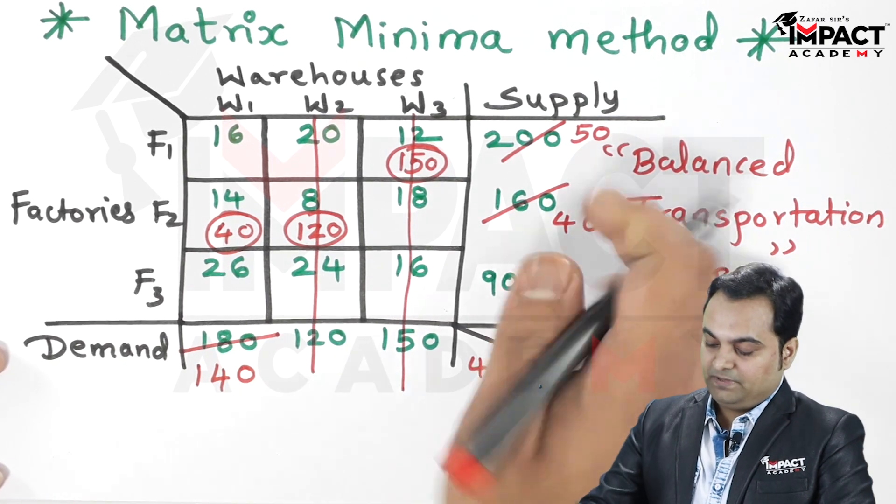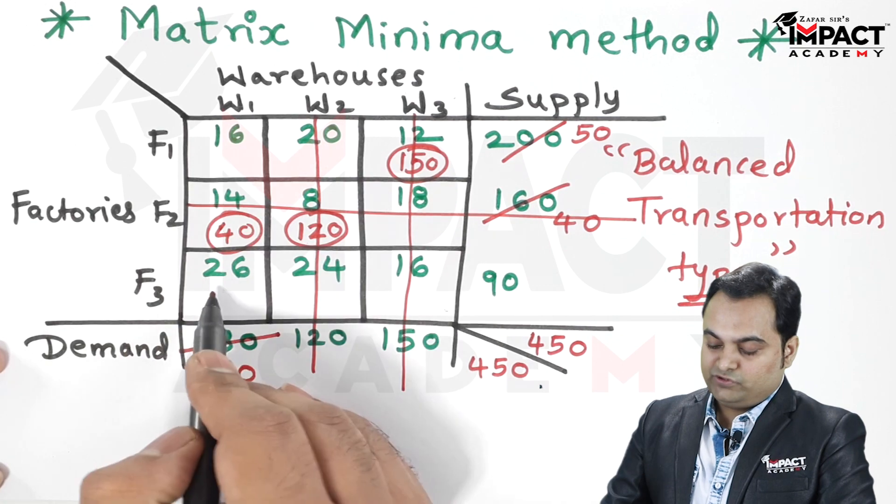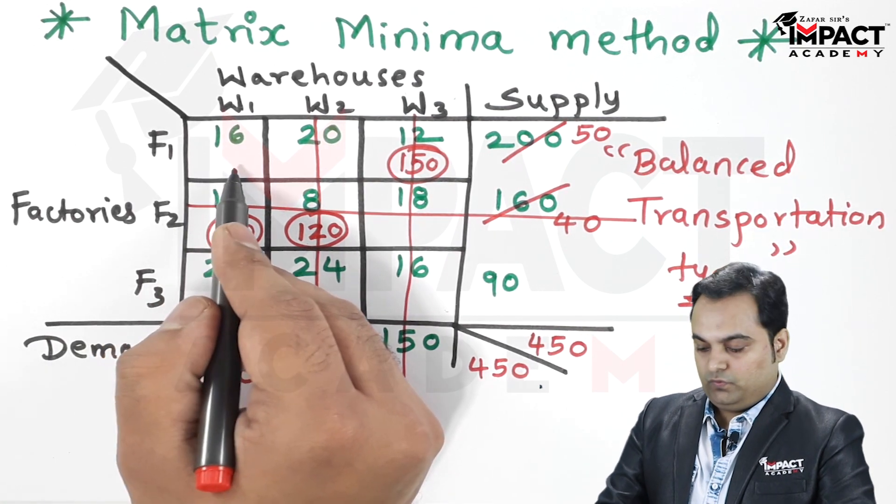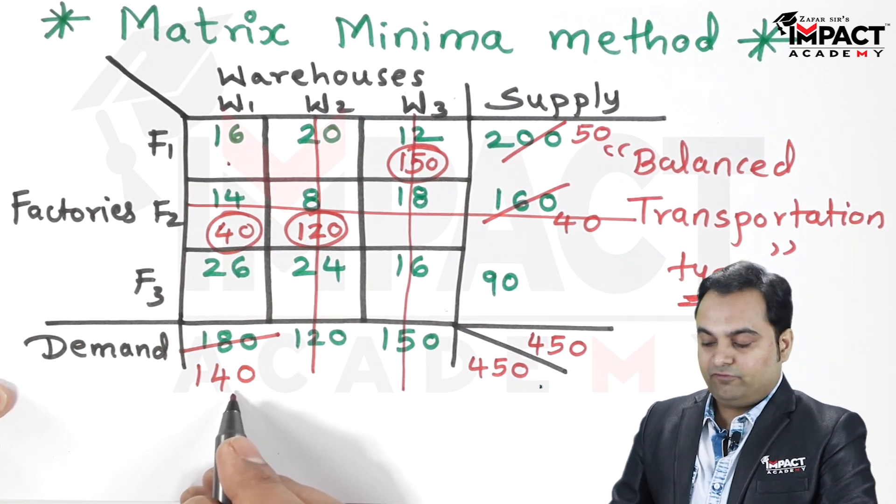So only 40 would be supplied here. Demand is not completely met. 180 minus 40, that is 140. Since the supply is completed, I can cancel this entire row. Then two cells remain, out of that select the minimum value of cost which is there in the cell.